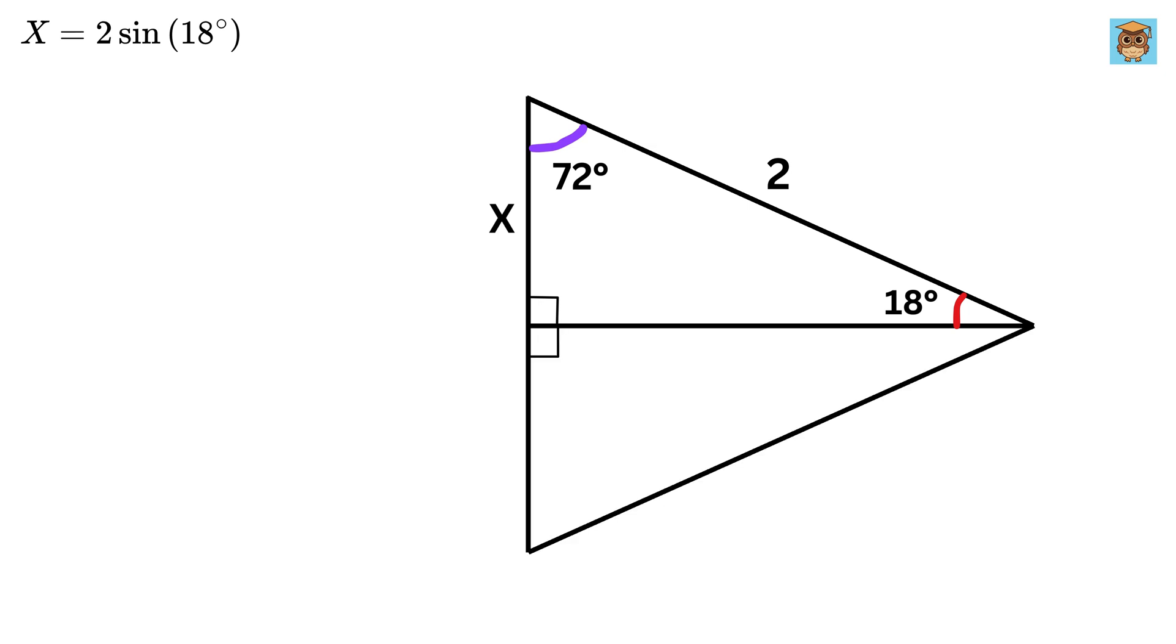So this angle will also be equal to 18 degrees, then this side length will be equal to x, then this angle will be equal to 72 degrees, and this hypotenuse will be equal to 2 units.